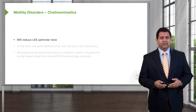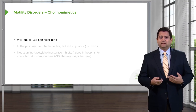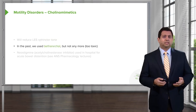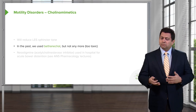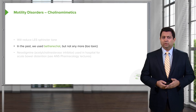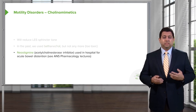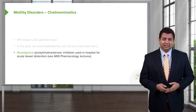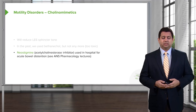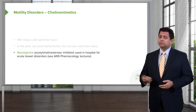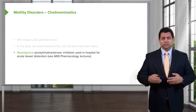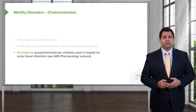Let's start off with the cholinomimetics. Cholinomimetics lower the sphincter tone of the lower esophageal sphincter. In the past we used drugs like bethanecol, but not anymore because bethanecol tends to be toxic and doesn't work as well as hoped. Neostigmine, which is an acetylcholinesterase inhibitor, is often used in the hospital for acute bowel distension. For further information on this agent, refer to the autonomic nervous system pharmacology lectures.